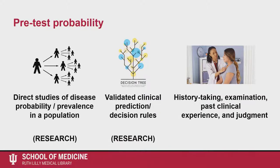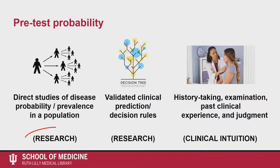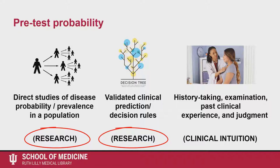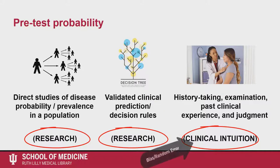The first two ways are based on research and the last way is based on clinical intuition. While the first two ways of determining pretest probability contain less bias, these studies are not common and prevalence information can be hard to find. Clinical intuition is a common way to determine pretest probability, but it is subject to bias and random error. When possible, it is best to use all three or two of the three ways to determine pretest probability.